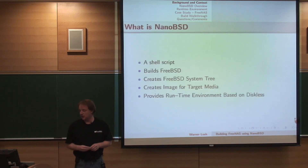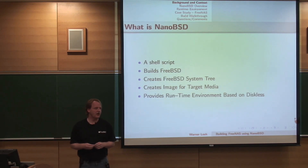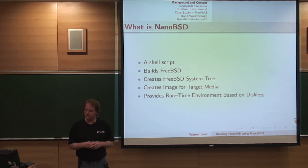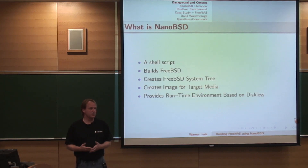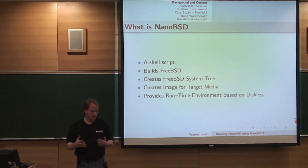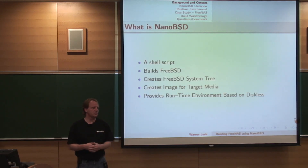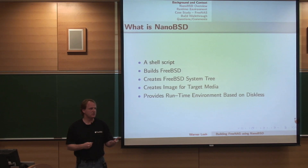NanoBSD is this big giant shell script that Paul Henning wrote and that dozens of our users have hacked on. We get about 10 or 20 patches a year from our developer community, so it's a fairly vibrant system. It will build FreeBSD, lets you control how you build FreeBSD, will install FreeBSD into a staging area, and lets you control how to install FreeBSD. It also has orchestration to create a target image — the most typical case creates a bootable x86 compact flash or USB stick image.